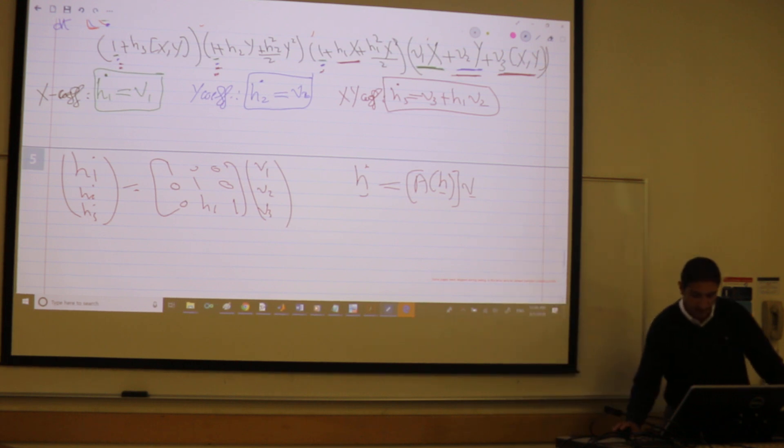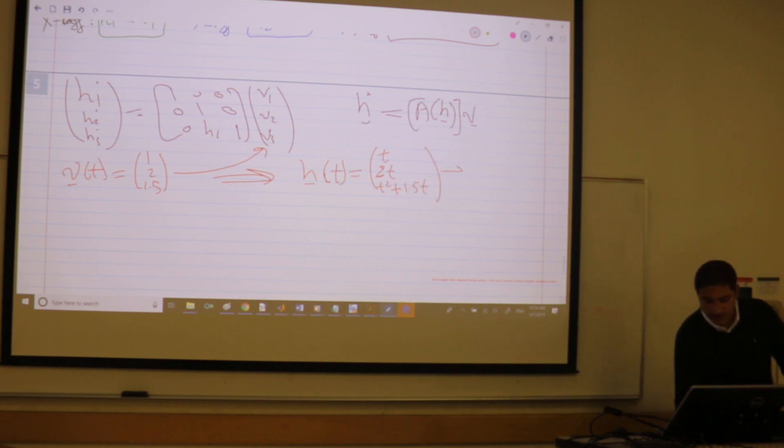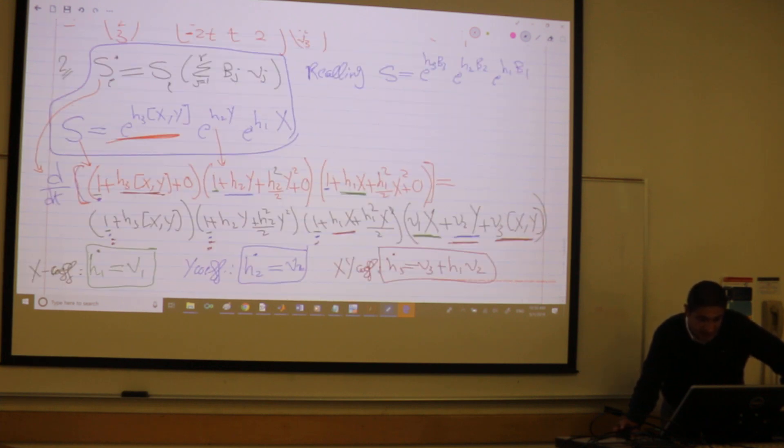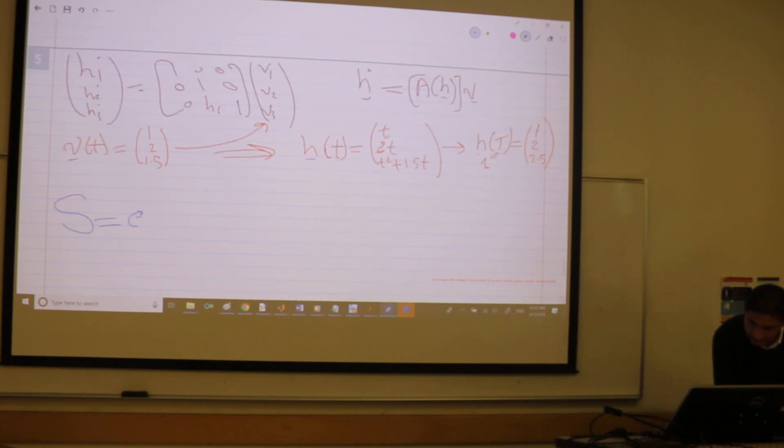So now I have my V's. I have my V's where it was like 1, 2 or 1, 2, and 5. And apply them, solve this differential equation to get H(T). This is easy. T and this is 2T. And I guess this is T squared plus 1.5T. In particular, I don't care about this guy. I just care about the final point. So this is (1, 2, and what?) This is 2.5, right? So this is H at T, which is T equals 1 second. You got the final point. So I got here my S. How S is written? I got the H's. These are the coordinates. They're called the Hall coordinates. So I can write my S now. It's e to the 2.5T.